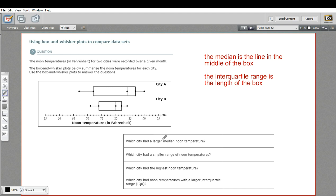All right, let's see if we can answer some questions based on this graph here. Which city had the larger median noon temperature? So on top, we've got city A, on the bottom, we've got city B, and this is temperature in Fahrenheit. So which had the larger median noon temperature?